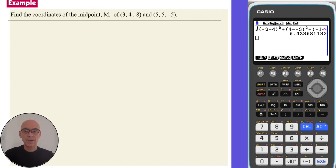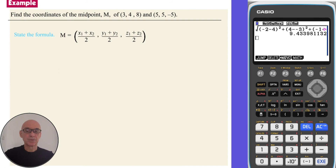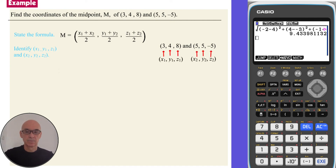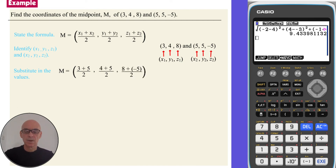In this question, we have to find the coordinates of the midpoint M of the two points given. We begin by stating the midpoint formula in three dimensions, then identify the points, and substitute in the values — first finding the average of the x coordinates, then the y coordinates, and finally the z coordinates. Simplifying the result gives a midpoint with coordinates (4, 4.5, 1.5).